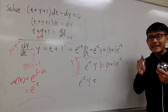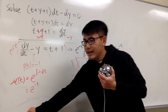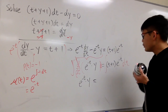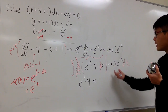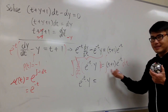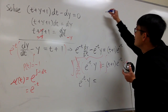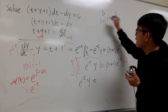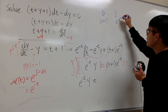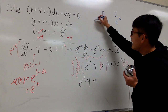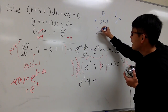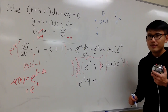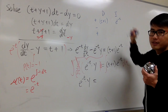We need integration by parts, and I'll show you with the DI method. I'll differentiate (t plus 1) and integrate e^(−t). On the side I need the signs: plus, minus, plus, minus. Three rows will be enough.